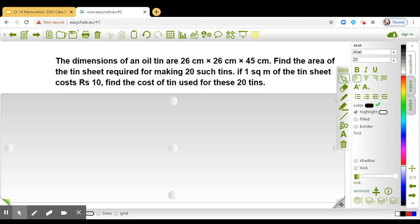Now you tell me, as per the dimensions which are given, what will be the shape of the oil tin? Yes, you are right. The shape of the oil tin will be a cuboid and what will be the length, breadth and height?